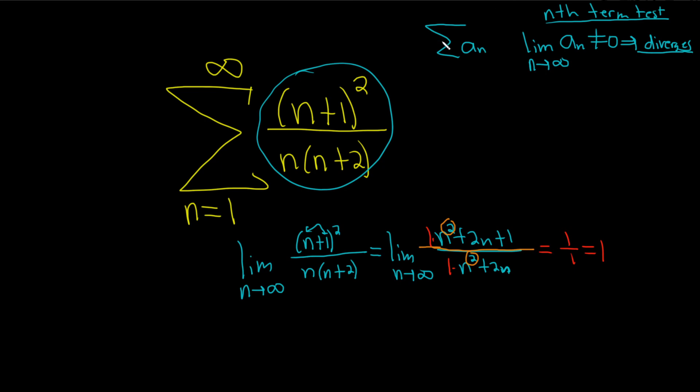So, what does that mean? Well, that means that this is not equal to 0, and so that implies that the series diverges by the nth term test.